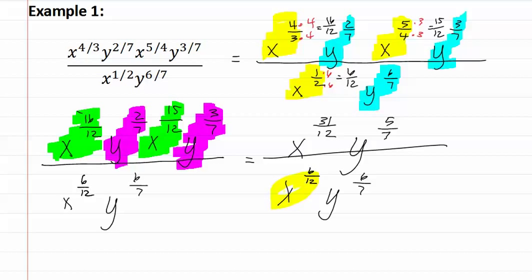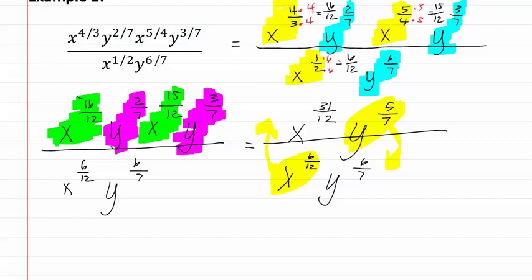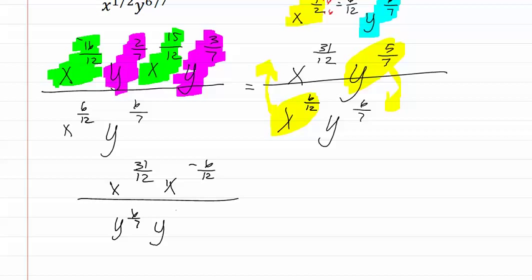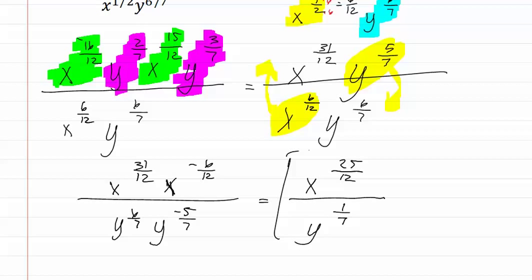Let's move the smaller exponent to the opposite side. This gives us x to the thirty-one-twelfths and x to the negative six-twelfths, as moving it up makes it negative — and y to the six-sevenths and y to the negative five-sevenths. We now combine the x's and the y's together: x to the thirty-one minus six, which is twenty-five-twelfths, over y to the six minus five, which is one-seventh. That gives us our final answer.